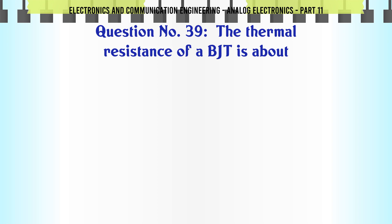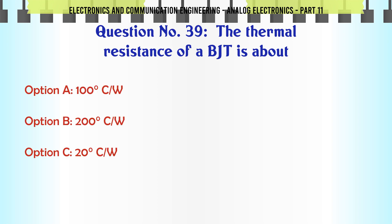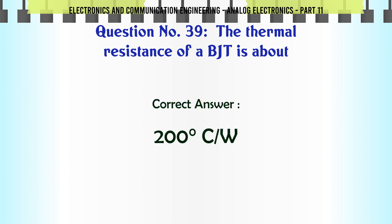The thermal resistance of a BJT is about. A. 100 C/W. B. 200 C/W. C. 20 C/W. D. 2 C/W. The correct answer is: 200 C/W.